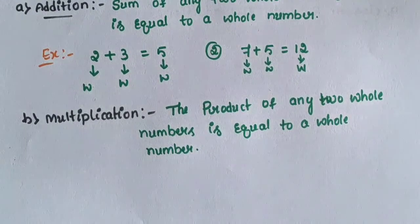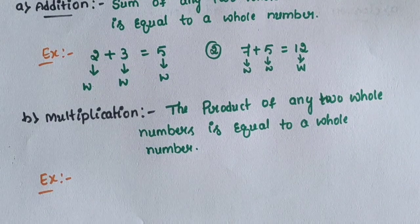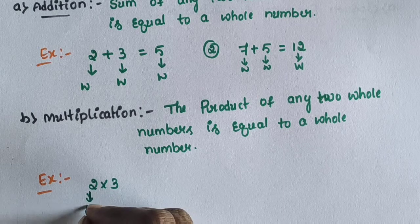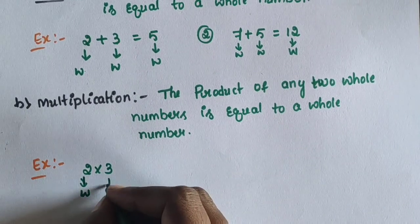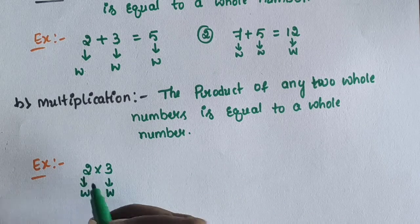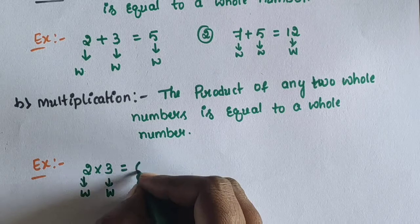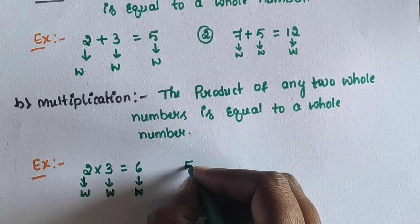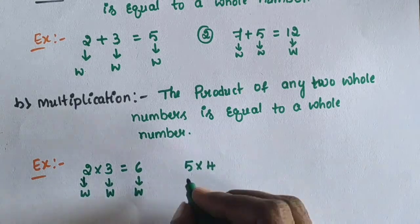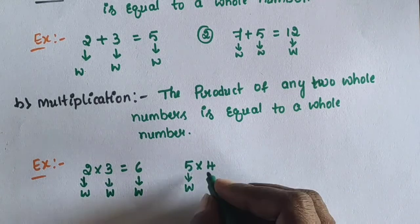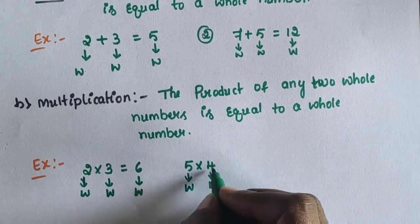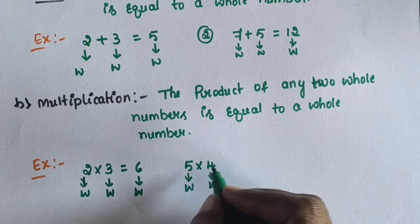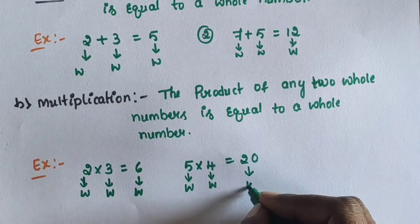For example, 2 into 3: 2 is a whole number and 3 is a whole number. The product of two whole numbers is equal to 6, and 6 is also a whole number. Another example: 5 into 4. 5 is a whole number and 4 is a whole number, and their product is also a whole number.